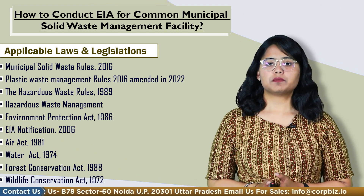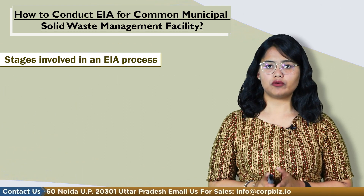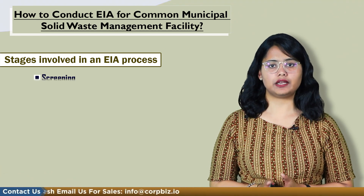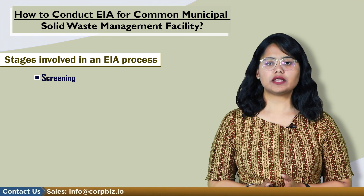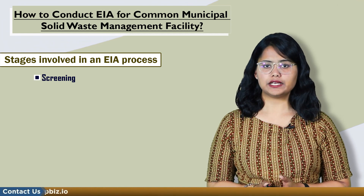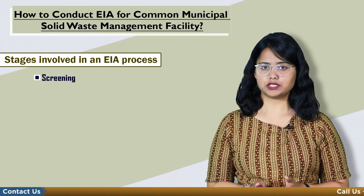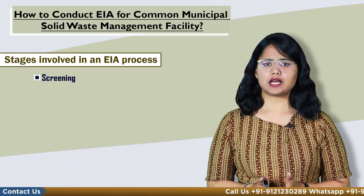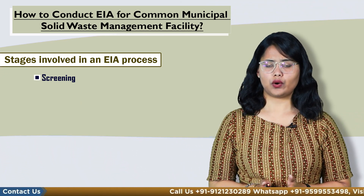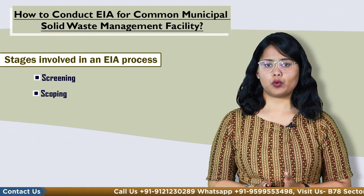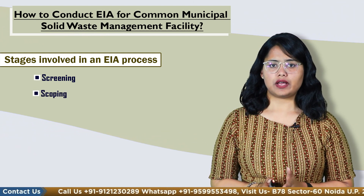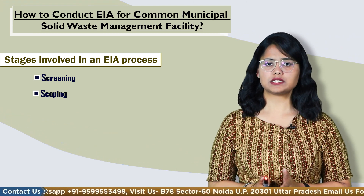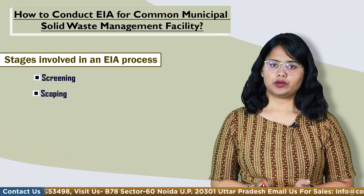To carry out an EIA, one must understand the stages involved. The first stage is Screening, which makes the project proponent aware of their obligations before deciding on budget, project design and execution plan, and determines if an EIA is required. The next stage is Scoping, which identifies the environmental impacts of the project and defines the scope of the study in the EIA report.